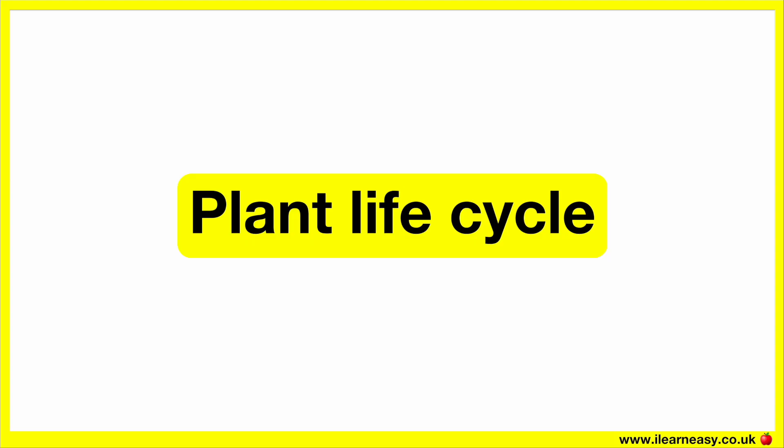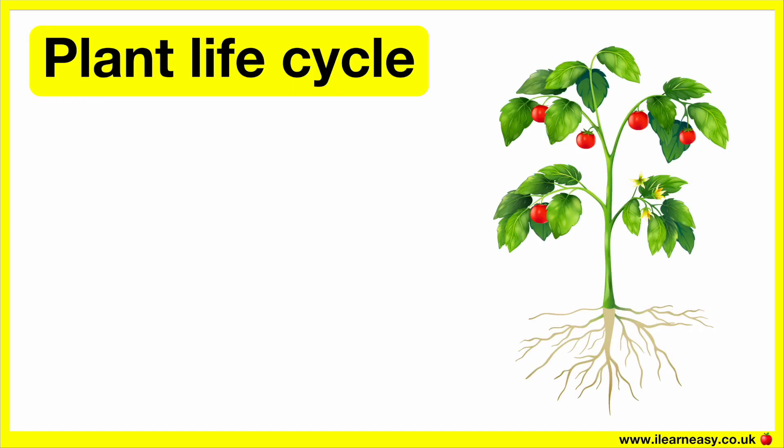In this video, we will learn about a plant life cycle. A plant life cycle consists of five main stages.